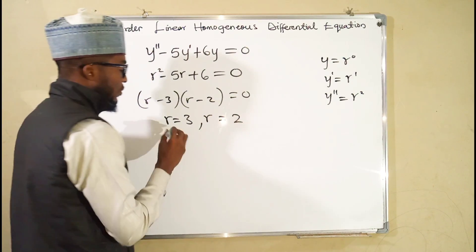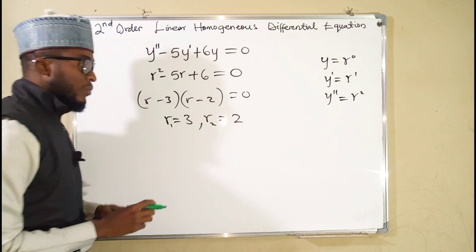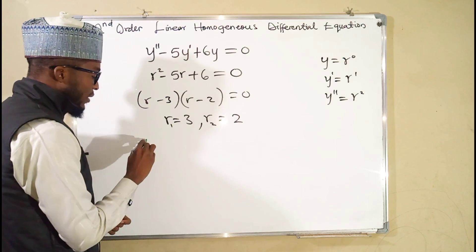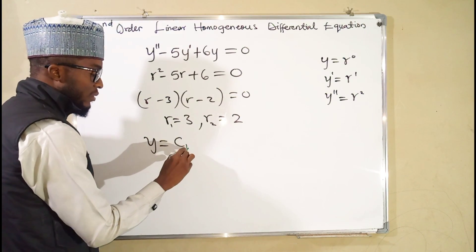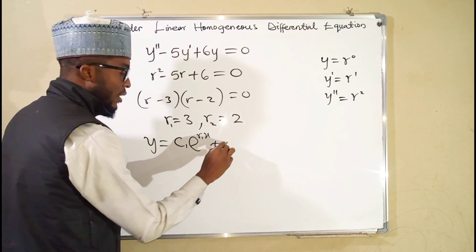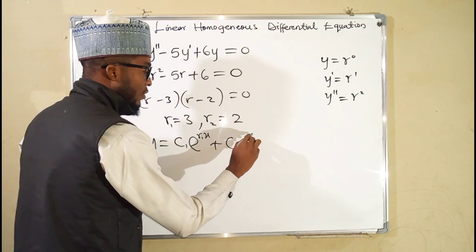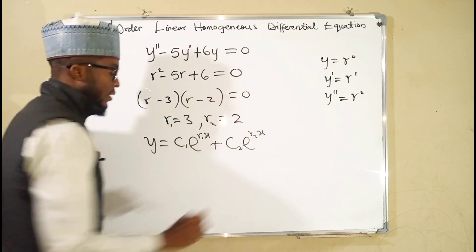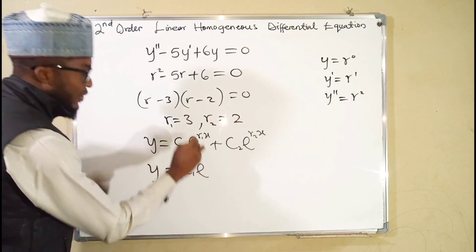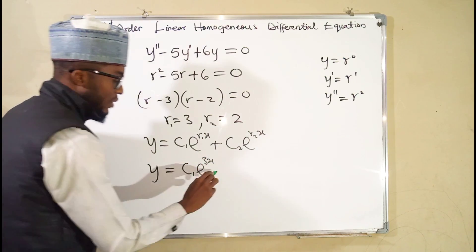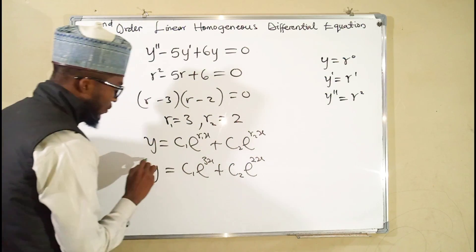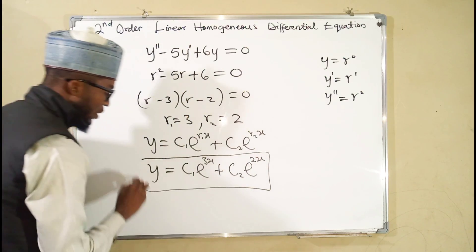So r1 = 3 and r2 = 2 are our roots. Remember, when we have real and distinct roots, the general solution is y = c1·e^(r1·x) + c2·e^(r2·x). Therefore the solution is y = c1·e^(3x) + c2·e^(2x). This is the general solution to this differential equation.